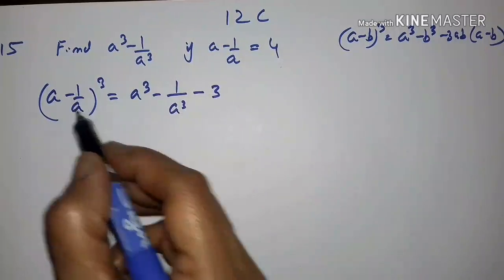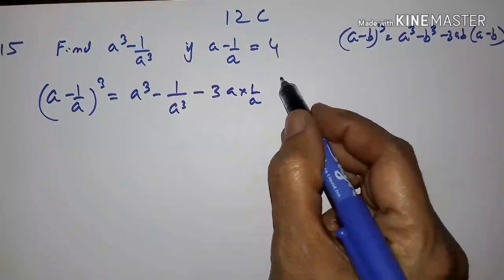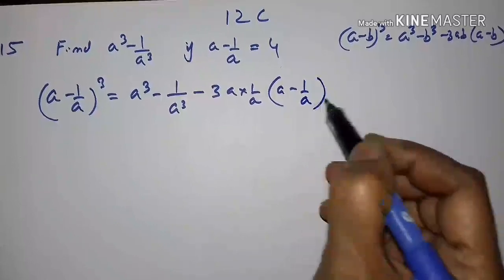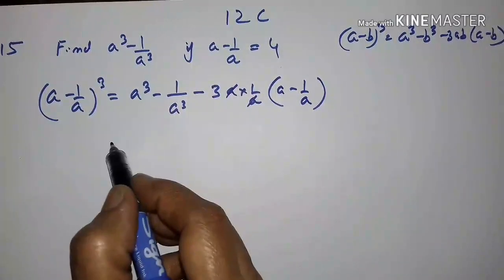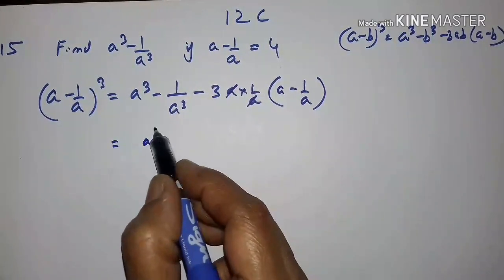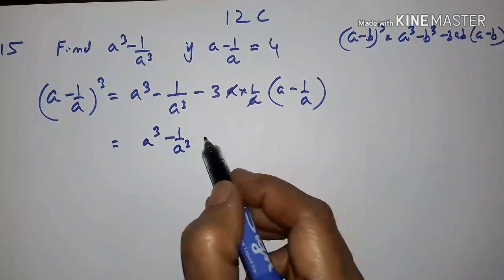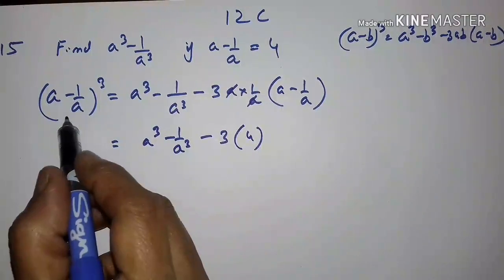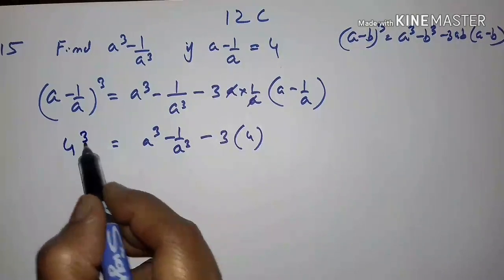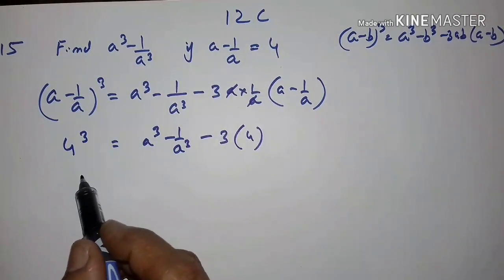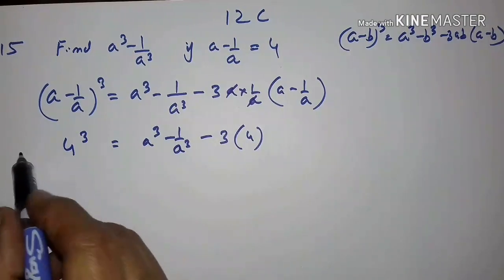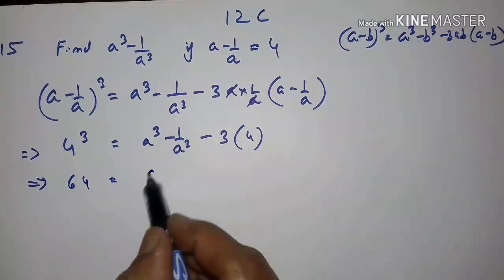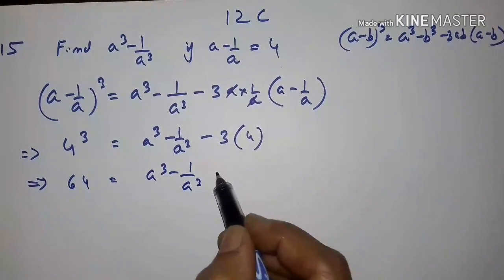Expanding: a minus 1 upon a, the whole cube, equals a cubed minus 1 upon a cubed minus 3 into a into 1 upon a into (a minus 1 upon a). The a's cancel. Substituting a minus 1 upon a equals 4, we get 4 cubed, which is 64, equals a cubed minus 1 upon a cubed minus 3 into 4, which is minus 12.